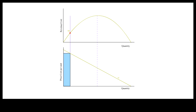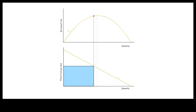The blue rectangular area in the lower panel and the vertical distance in the upper panel both represent total revenue. The vertical distance in the upper panel simply maps the rectangular area in the lower panel as more units are sold at lower prices. Total revenue increases as price decreases because demand is elastic — the percentage increase in quantity more than offsets the percentage decrease in price.